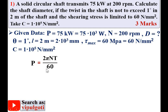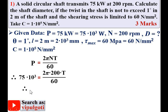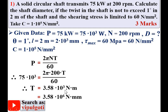Since power is given, use P = 2πNT / 60. Substituting P = 75 × 10³ and N = 200 rpm, we can find torque T = 3.58 × 10³ N·m. Converting to N·mm gives T = 3.58 × 10⁶ N·mm.